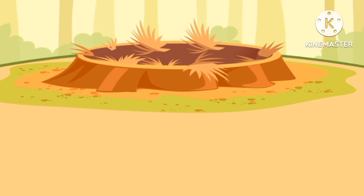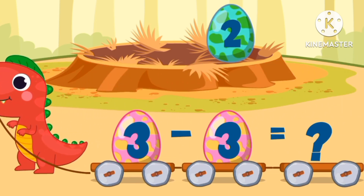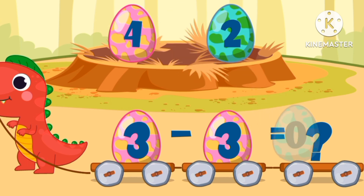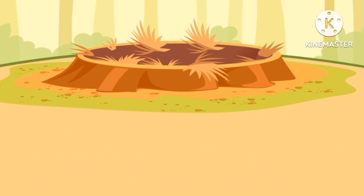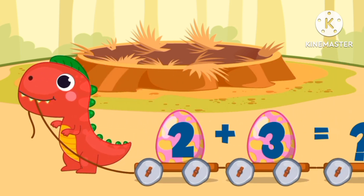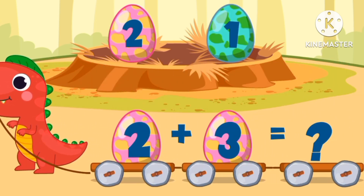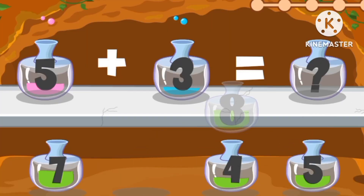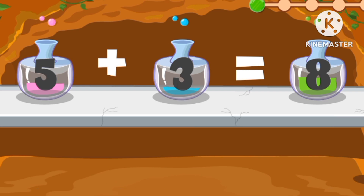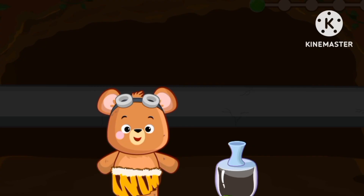It's so fun! Let's count more. What's three minus three? Is it four, two, or zero? Zero. It's zero. Three minus three equals zero. Let's count more eggs. What's two plus three? It's number five. Two plus three equals five. What's five plus three? Eight. Five plus three equals eight.